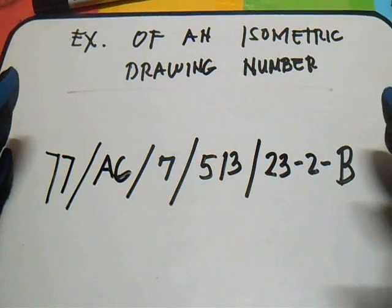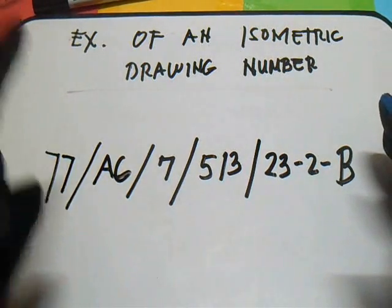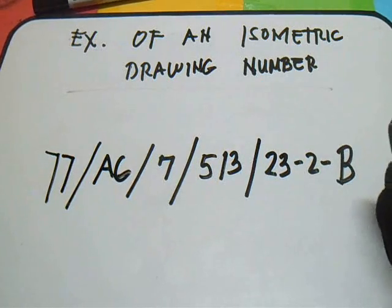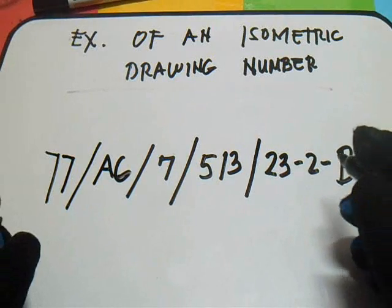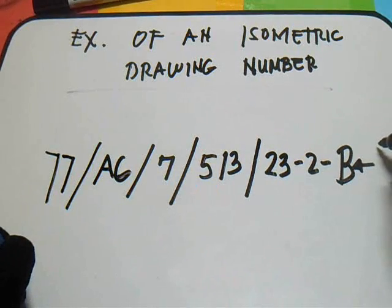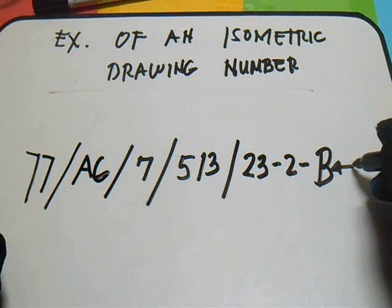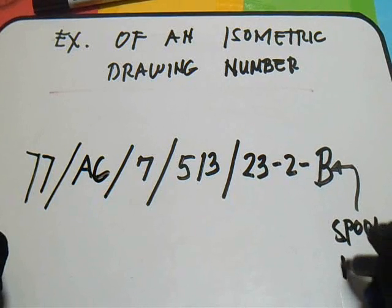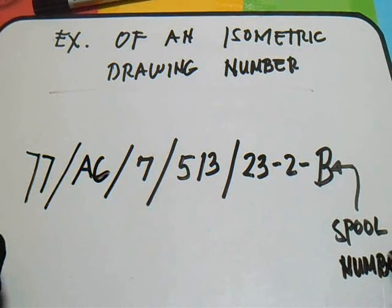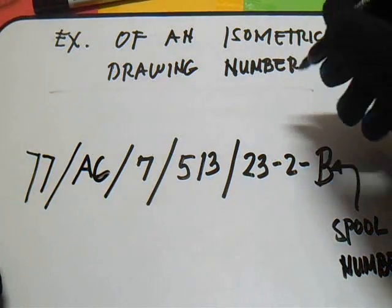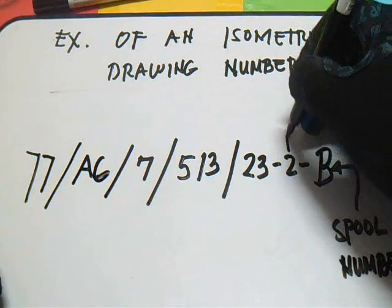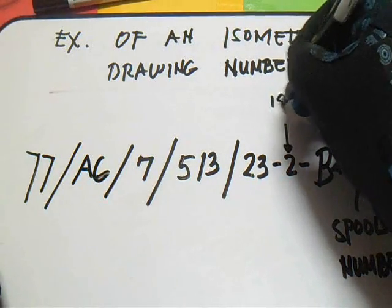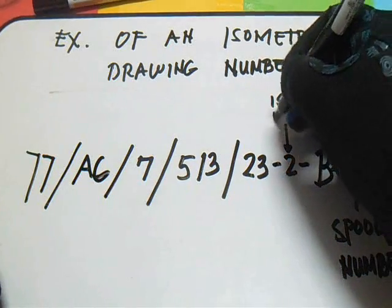So what is this 77, what is AG, what is 8, what is 513? This is very, very important. The letter V is the spool number, and the number 2 is the ISO number.